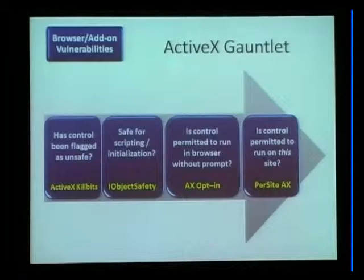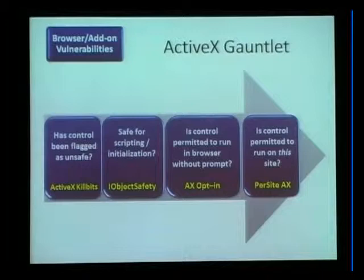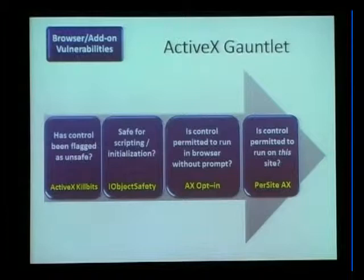So something else happened — we introduced a new measure to the gauntlet called kill bits. Basically, it's the ability to maintain a list of ActiveX controls that is rolled out through central update mechanisms, saying this control can't be run in the browser. If a vendor finds a vulnerability in their ActiveX control and needs to ensure it doesn't run within the browser, they contact secure@microsoft.com and get that control flagged as a kill bit.